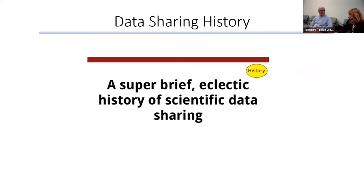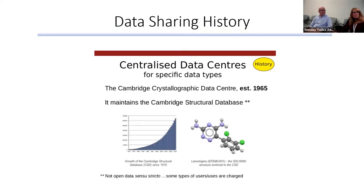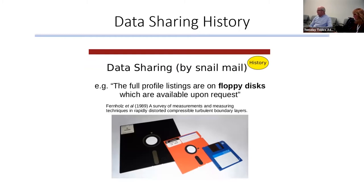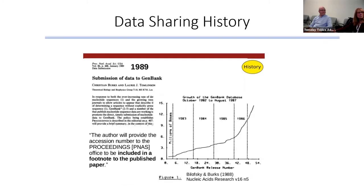This is a history of how data sharing has occurred. Back in about 1965, we had centralized data centers where people looked up different genetic codes — crystal structures put on a central repository. Then we had floppy disks — those of us old enough remember having all our data on floppy disks. Then we had things like GenBank; I have a paper with GenBank but I never go there to see what's in it. This was the next way we said we'll have this big data repository and everybody will share it, but I don't think we've ever really gone back to GenBank.